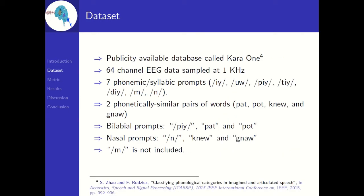The experiments are conducted on a publicly available EEG dataset developed by the University of Toronto. The dataset contains EEG recordings of 14 participants while they were imagining speaking 11 different prompts, which include 7 phonetic or syllabic prompts and 2 phonetically similar pairs of words. The prompts P are considered under bilabial prompts and N under nasal prompts. Although M is among the 11 prompts in the dataset, it was not included in the study since M is both a nasal and a bilabial.